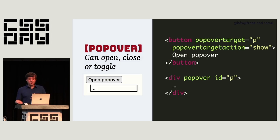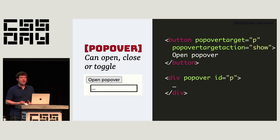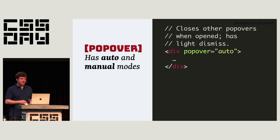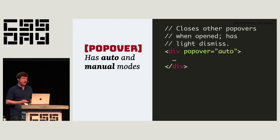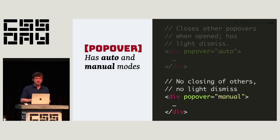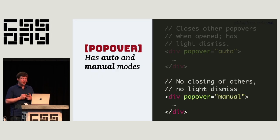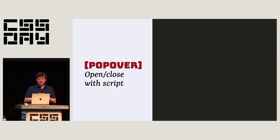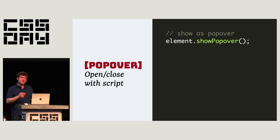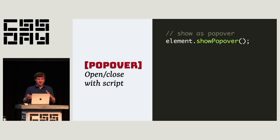There is also the popovertargetaction attribute where you can specify exactly what you want your button to do. By default it's toggle, but you can set it to only show or only hide — useful for close buttons. There are different modes: auto mode closes other popovers when opened and has light dismiss; manual mode doesn't close others and doesn't light dismiss. New modes are being discussed, like hint mode, but these are what's currently shipping in browsers. You can also do all this in script — if you want a feedback popup after a certain time, you can absolutely do that.